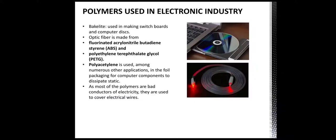Polymers are also used in the electronics industry. For example, Bakelite is used in making switch ports and computer disks. Optical fiber is made of fluorinated acrylonitrile butadiene styrene (ABS) and polyethylene terephthalate glycol (PETG). Polyacetylene is used in foil packaging during computer transportation. Since most polymers are bad conductors of electricity, they are also used to cover electrical wires to prevent electrical discharge.